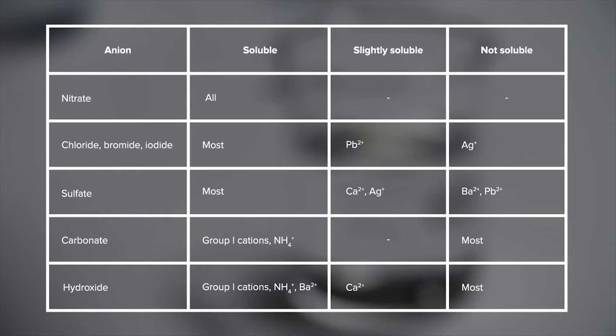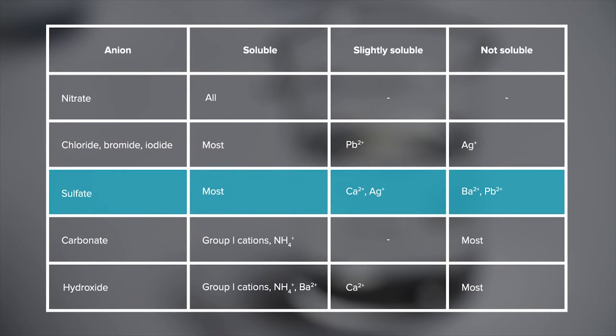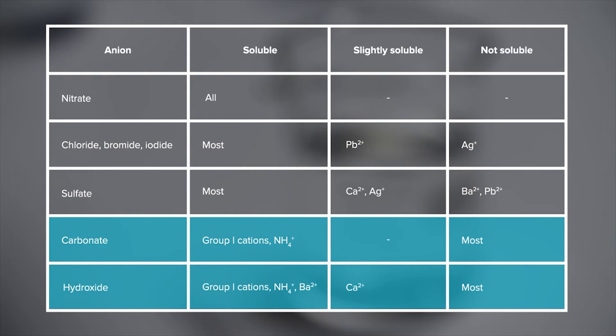Chemists have developed solubility rules that allow us to predict which combinations of ionic solutions form precipitates. The table shown here summarises these rules where water is the solvent. When looking at solubilities of ionic compounds in water: all nitrate salts are soluble, all group 1 and ammonium salts are soluble, and most group 7 and sulphate salts are soluble. However, most carbonate salts and hydroxide salts are not soluble.